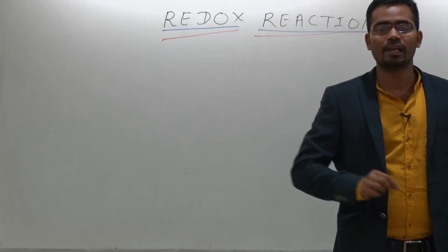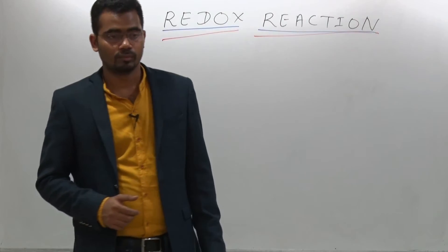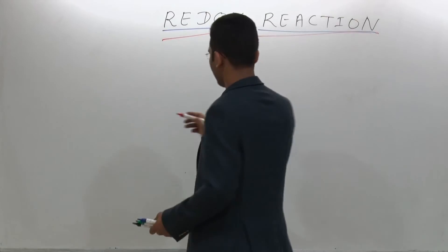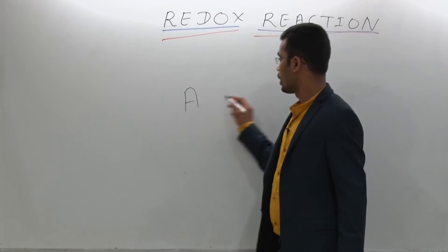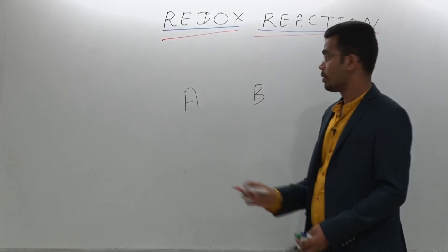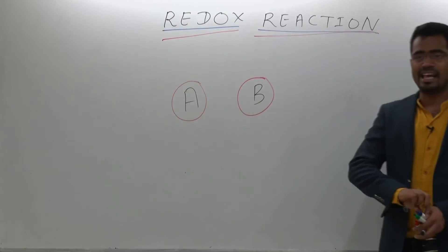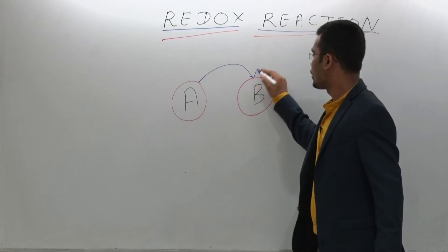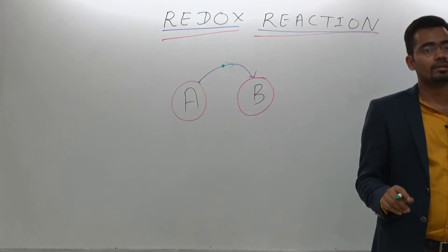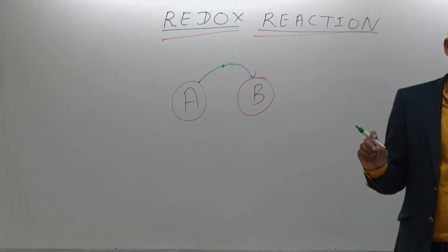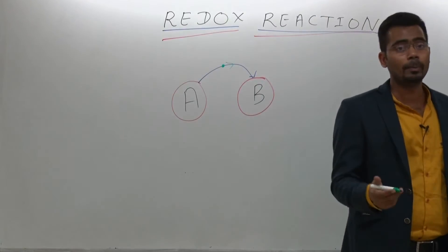What is the redox reaction? Basically, redox is the reaction which occurs by movement of electrons. If we have A and we have B, and if electrons move from A to B, then this reaction is called a redox reaction. The reaction which occurs because of movement of electrons.